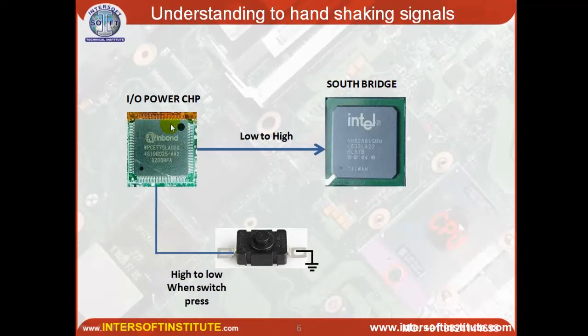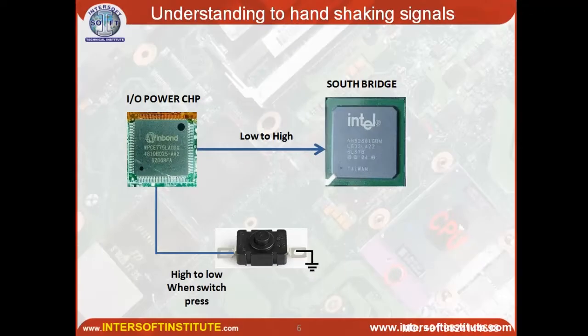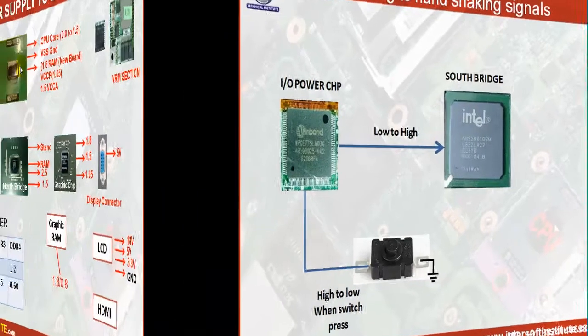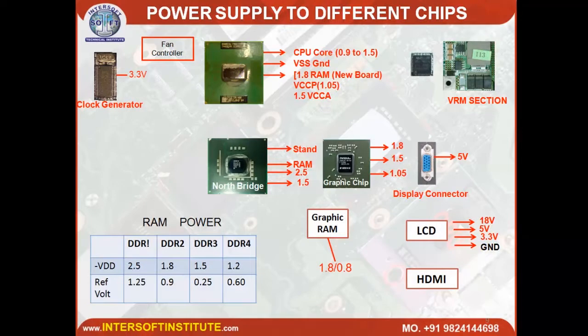The power IC will give signals to the regulator ICs and VRM ICs. After receiving the power-good signal, it will send the power-good signal to the north bridge. All these passing signals are called handshaking signals. Nowadays new CPUs require three or four different voltages, while older CPUs required only one voltage.